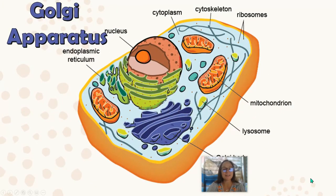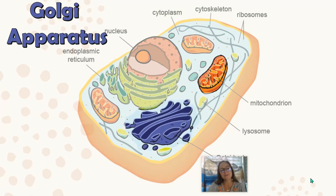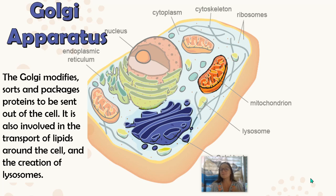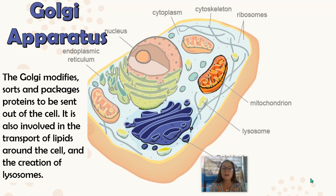Next is the Golgi apparatus, which is often compared to a post office. The Golgi is where proteins are packaged, modified or sorted, and get ready to be sent out of the cell. For example, insulin is a protein-based hormone — when a ribosome makes insulin, it goes to the Golgi to be prepared and then sent out by exocytosis. The Golgi is also where lysosomes are made.